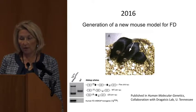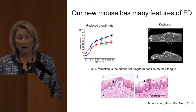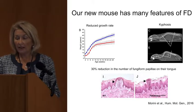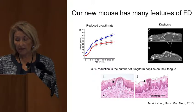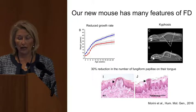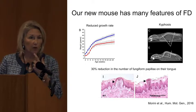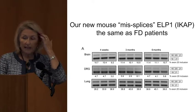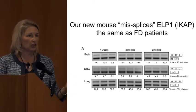The new mouse that we made has many features of FD. They have reduced growth, as you can see on this graph. They have kyphosis and they have a reduction in the number of fungiform papillae on their tongue. Kids with FD don't have fungiform papillae on their tongue, and neither do the mice. And importantly, this mouse missplices the gene just like FD patients do.